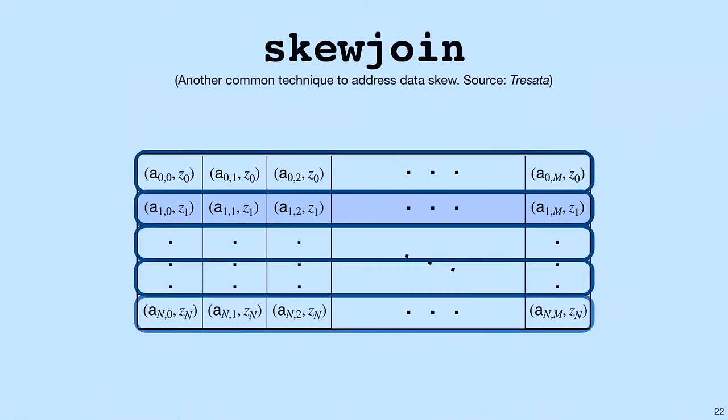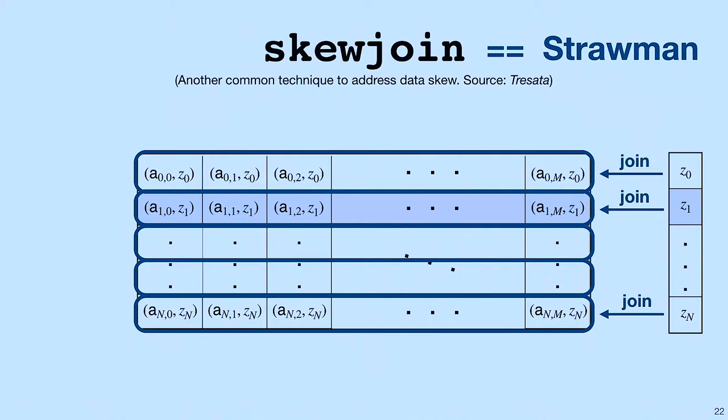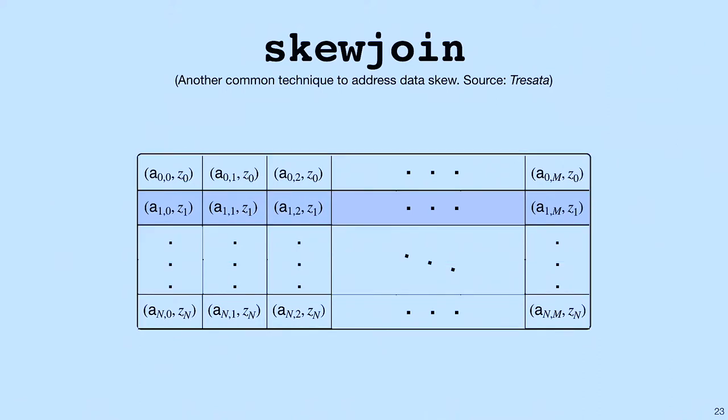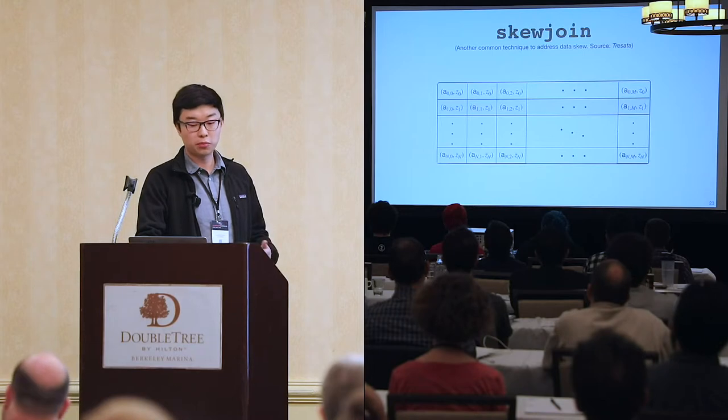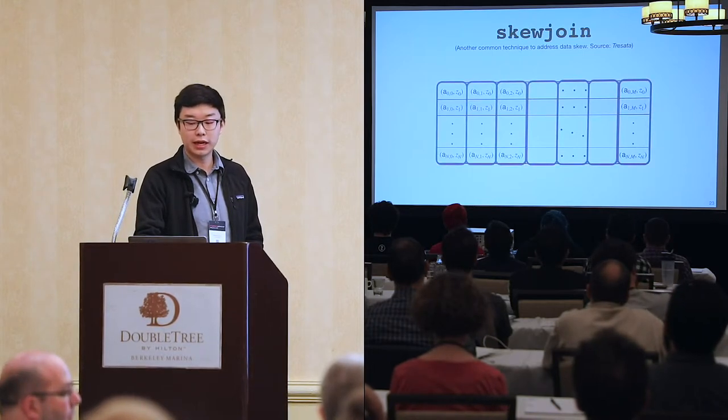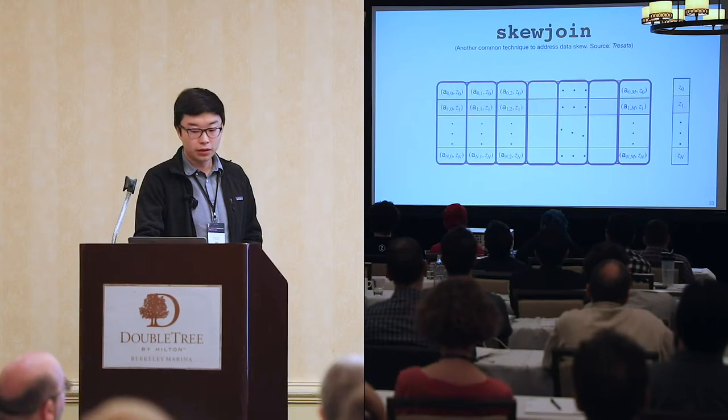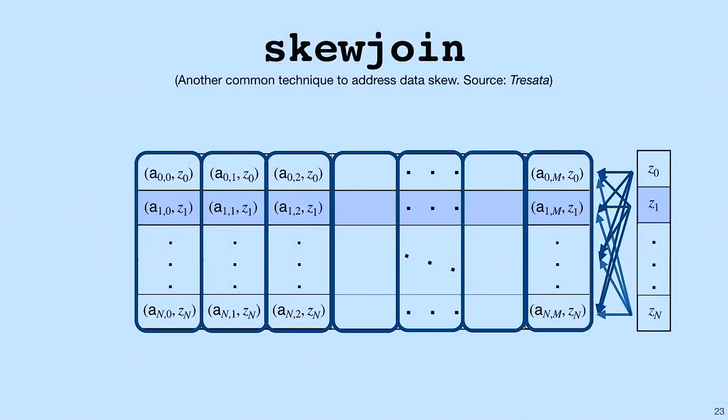If our matrix A is partitioned row-wise, and we perform a SkewJoin operation with vector z, we'll see that each partition only needs access to one unique element from vector z. Notice that in this case, SkewJoin is functionally equivalent to the strawman. If our matrix A is partitioned column-wise, we need to perform SkewJoin with vector z, and we see that each partition now needs access to every unique element from vector z. In this case, SkewJoin is functionally equivalent to the BlockJoin approach. No matter how we organize our data, off-the-shelf approaches will cause unnecessary replications that blow up our memory. This makes it impossible to scale our system.